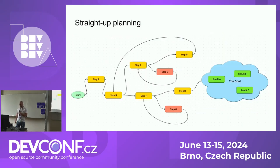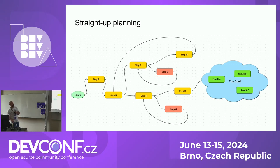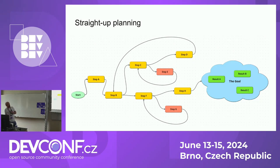Usually when people plan something, they have some goal - it's like in a cloud. For example, you've been asked to do something, and you imagine the result something like that. In that cloud should be several results like that. And you go from the start, step by step, to reach your goal. Usually it goes like that - at least, that's my example.